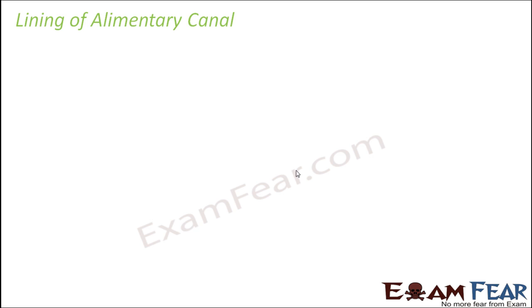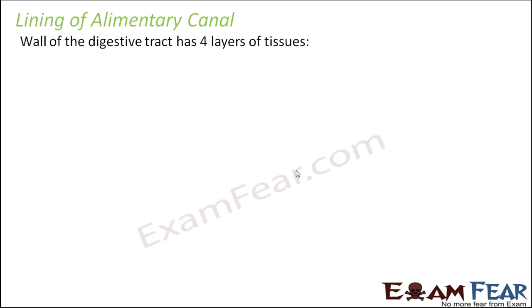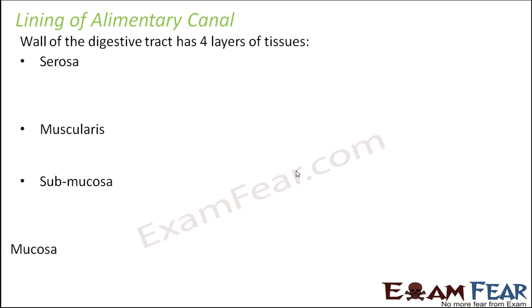Before we discuss how digestion and absorption takes place inside the small intestine, we will quickly discuss the lining of the alimentary canal. All the organs that together form the alimentary canal have a multi-layered epithelium. The wall of the digestive tract has 4 layers of tissues: serosa, muscularis, submucosa, and mucosa.